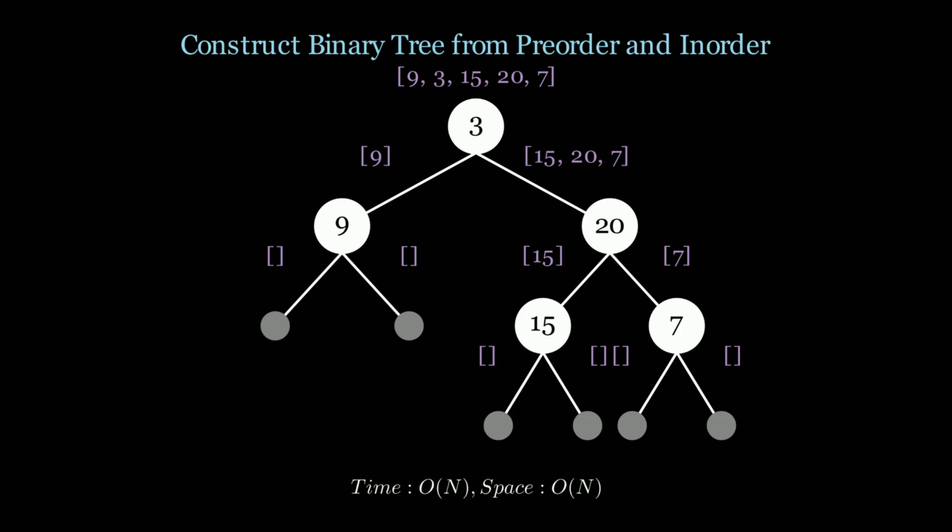The time complexity of this is O(n) because we simply iterate through the pre-order and in-order list just once, and the space complexity is O(n) for the recursive call stack and also for creating the binary tree.